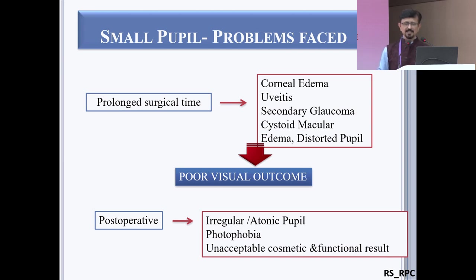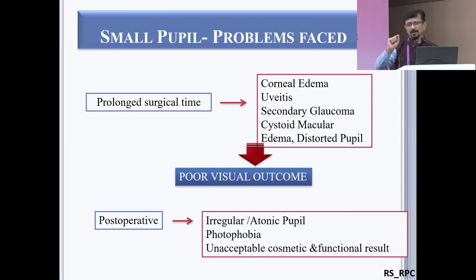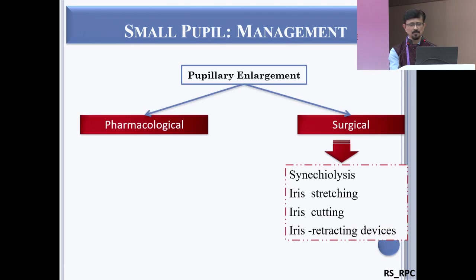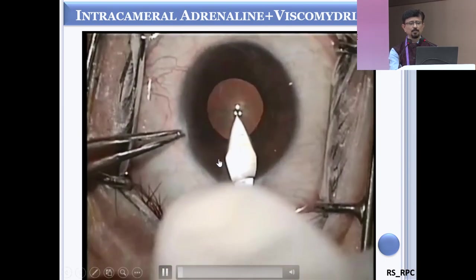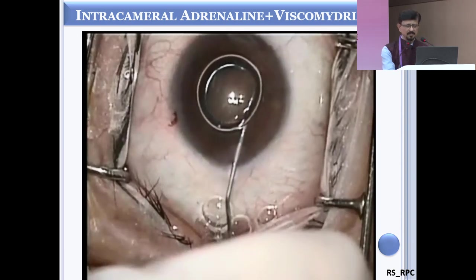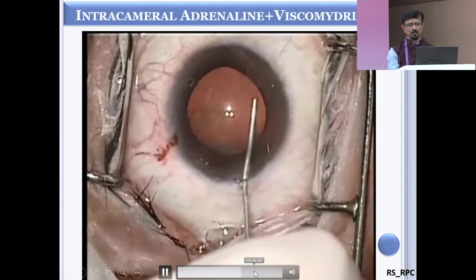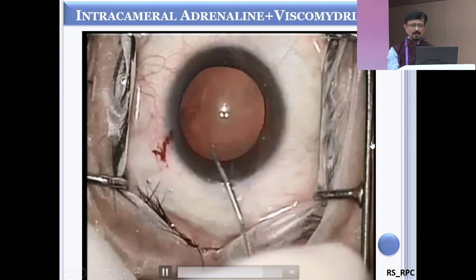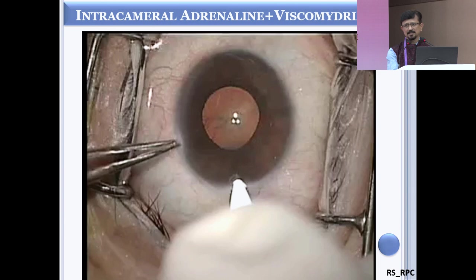The basic idea is that the pupil should be such that wherever you are taking the instrument, you should be able to see the tip. That is the key, and that is why pupil enlargement is required. In many cases, if you inject intracameral mydriatics or intracameral adrenaline, it will dilate and help. With current generation viscoelastics, you can achieve a very nice large pupil and complete the procedure.